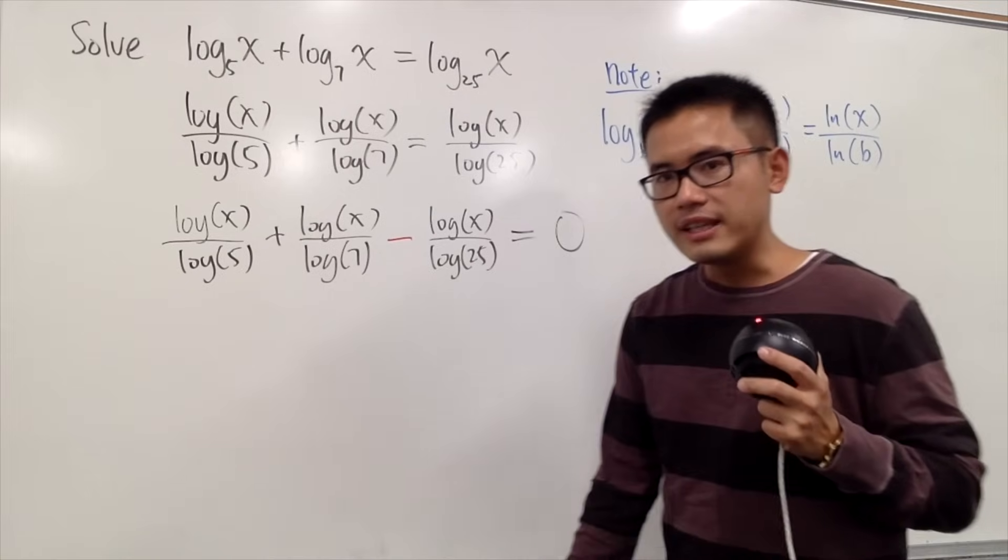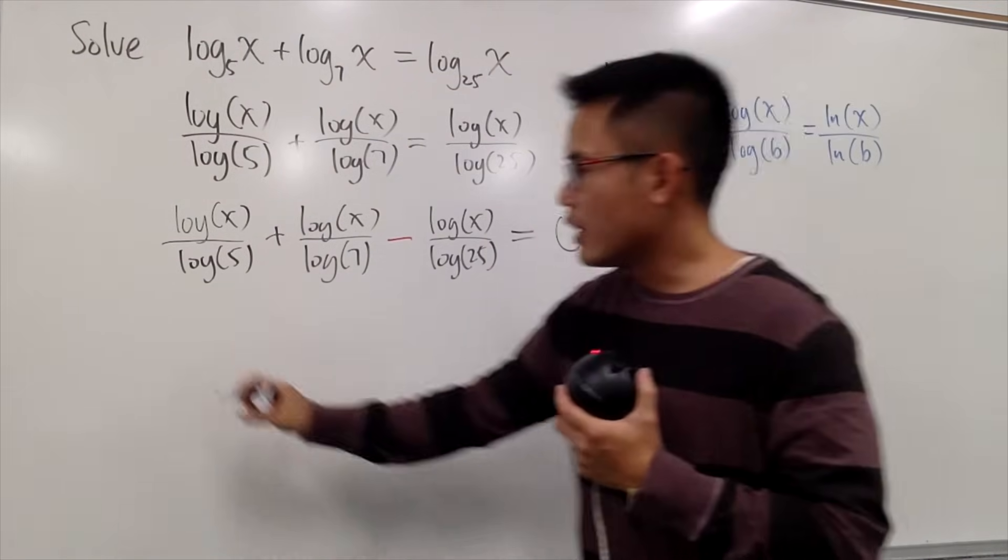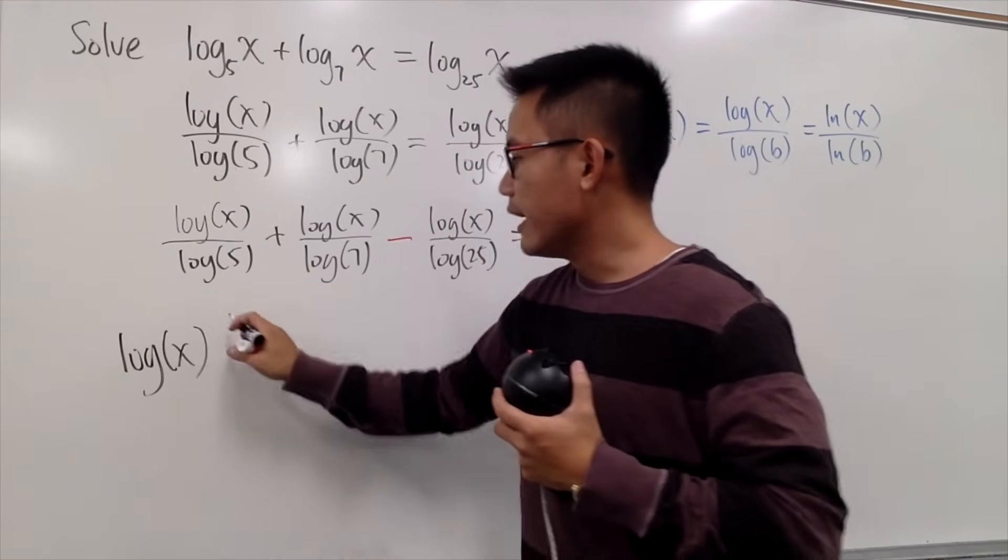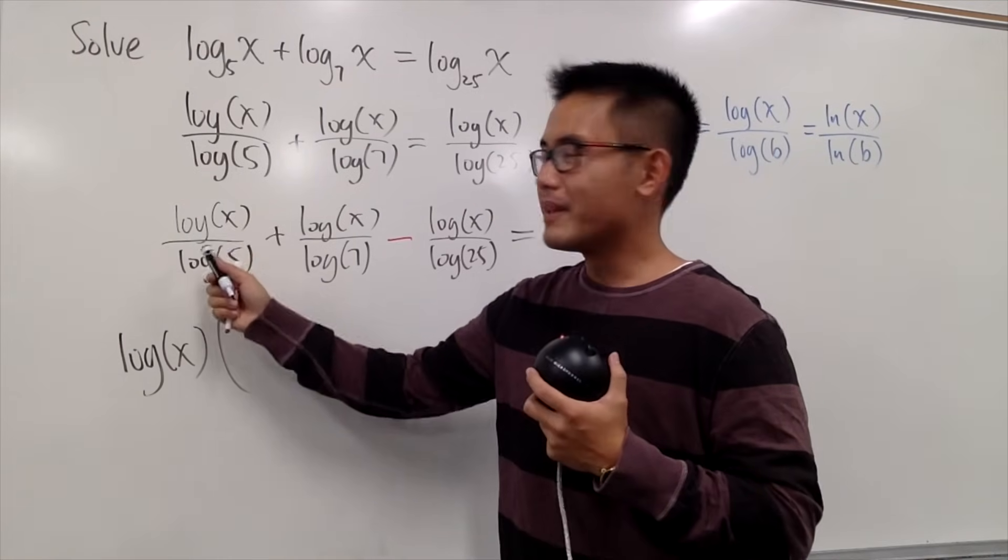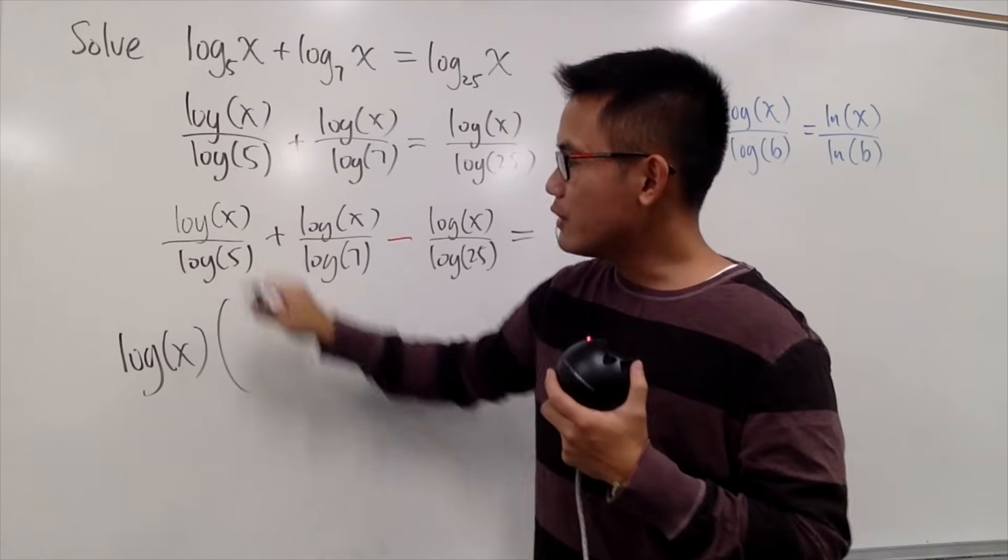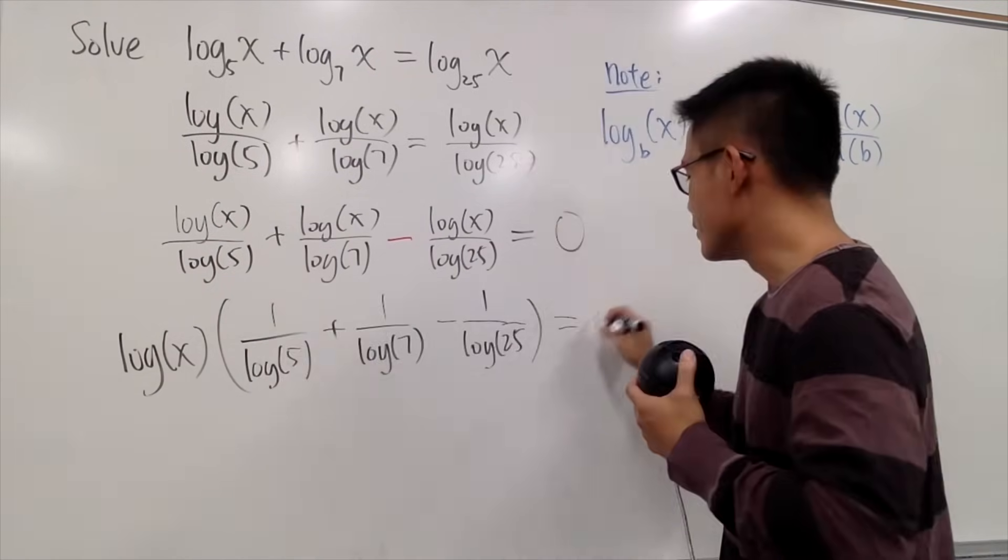And now, as I said earlier, because they all have the log of x, we can factor that out. So let's do that. Let's put down the log of x all the way in the front, and then open a bigger parentheses. So here, we factor out the log of x, so we have the 1 on the top. For the first term, we will have 1 over log of 5, like this. This is equal to 0.